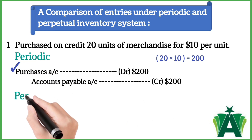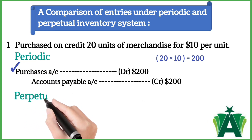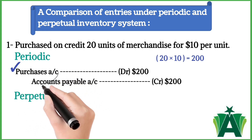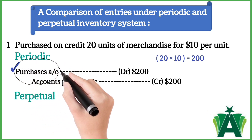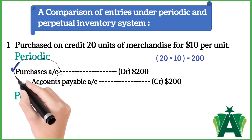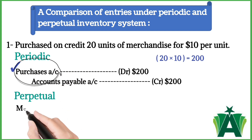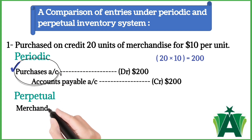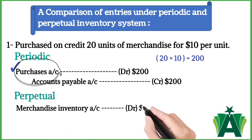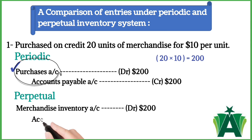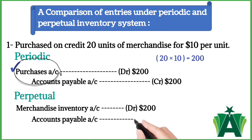Under the perpetual inventory system, the perpetual system does not use a Purchases account. Instead, the cost of the items purchased is debited directly to Merchandise Inventory. Journal entry will be: Merchandise Inventory account debit $200, Accounts Payable credit with the same amount.